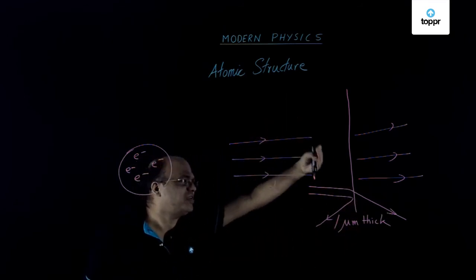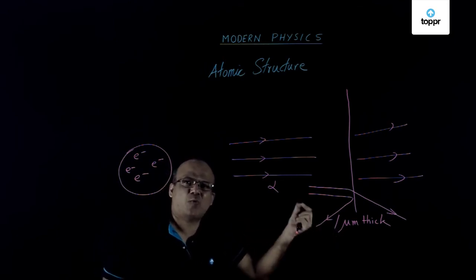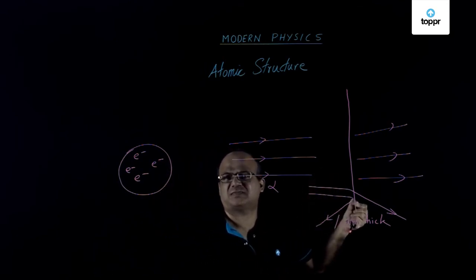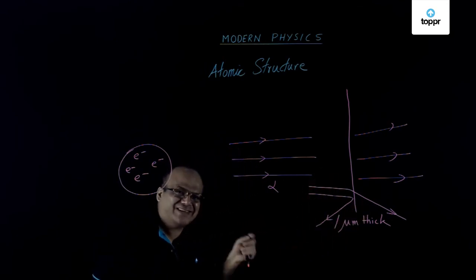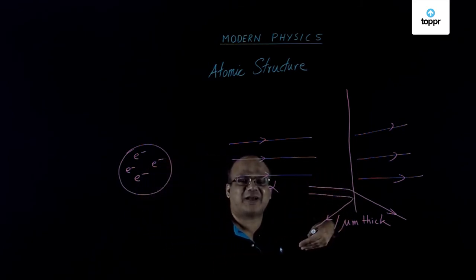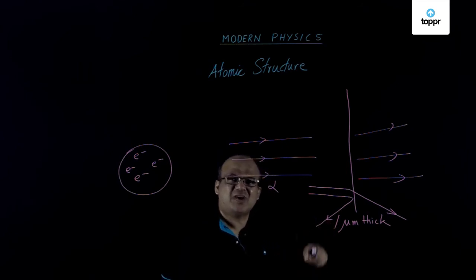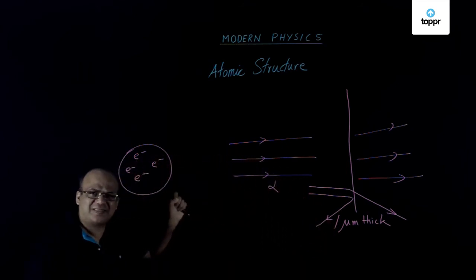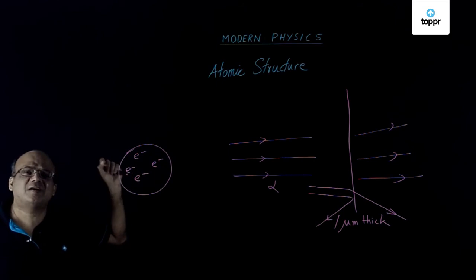This is such a thin metal foil. One micrometer thick. Rather thin. Even then some alpha particles are turning back.